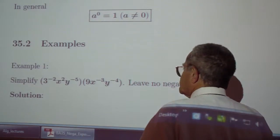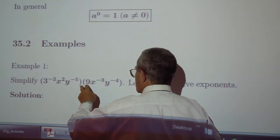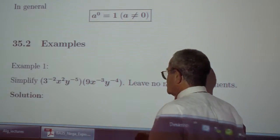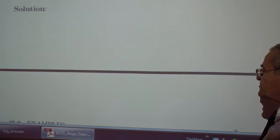Examples. Simplify 3 to the negative 2x squared y to the negative 5 multiplied by 9x to the negative 3 y to the negative 4 and leave no negative exponents.